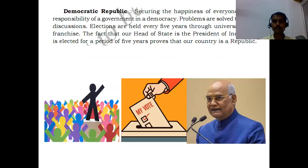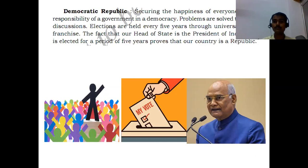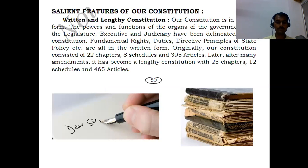The preamble also mentions democratic republic. Securing the happiness of everyone is the responsibility of the government. Problems are solved through discussions and elections are held every five years through universal adult franchise. Every citizen who crosses 18 years of age is eligible to vote. The fact that our head of state — the President of our country — is elected for a period of five years proves that our country is a republic.